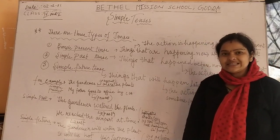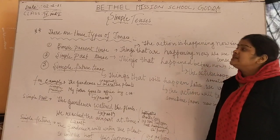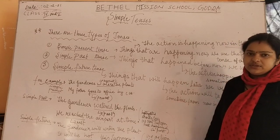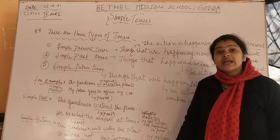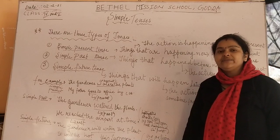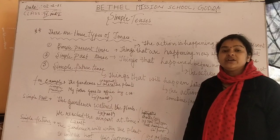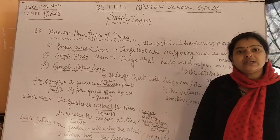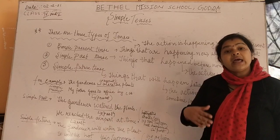Let's begin with the chapter, Simple Tenses. Tense means 'car' — it is the time period, the time period when the work will happen, when the work is happening, and when the work had happened.